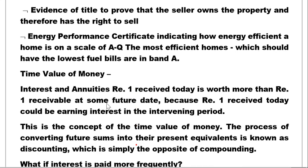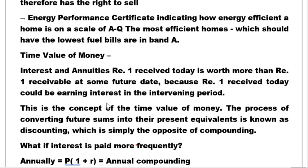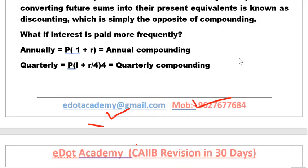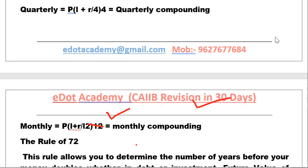Time value of money is very important. For annual compounding, the formula is P × (1 + r)^n. For quarterly compounding, divide the rate by 4 and raise to the power of 4n. For monthly compounding, divide by 12 and raise to the power of 12n. The Rule of 72 allows you to determine the number of years before your money doubles: divide 72 by the rate of interest. For example, at 9% interest, 72 ÷ 9 = 8 years.